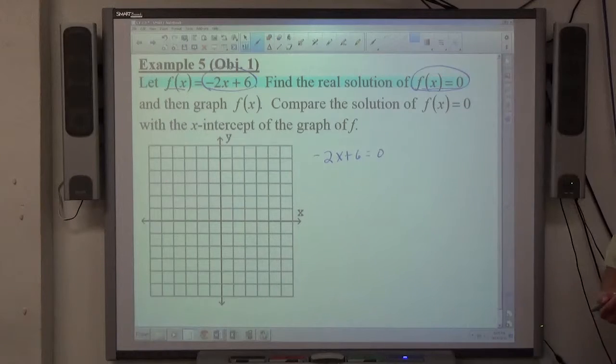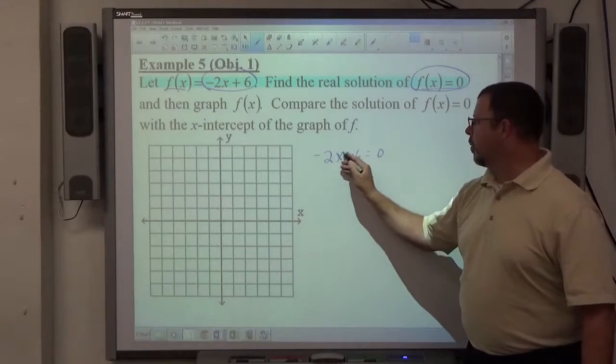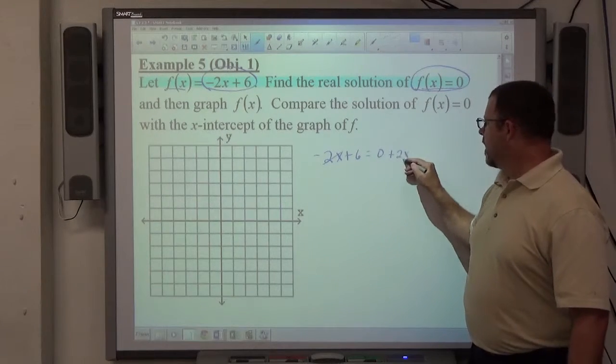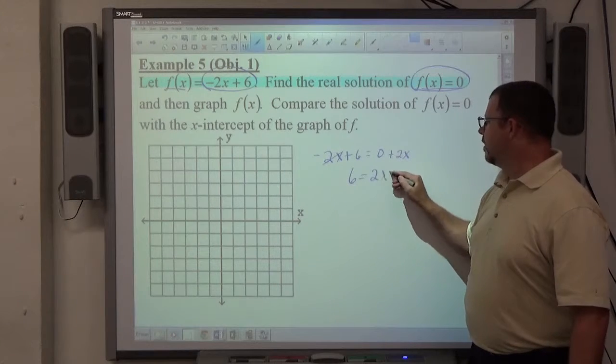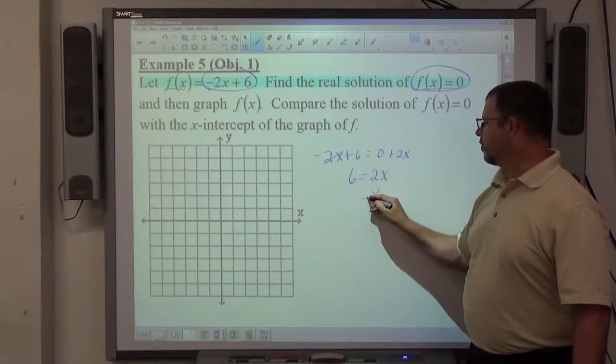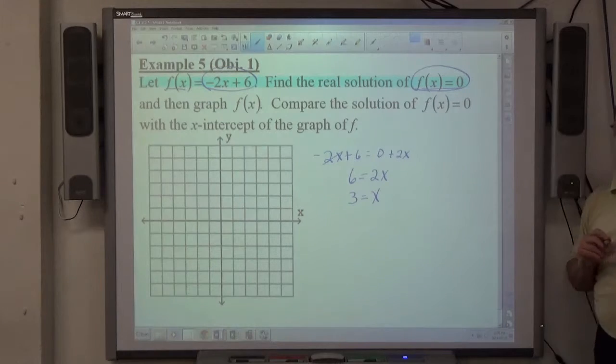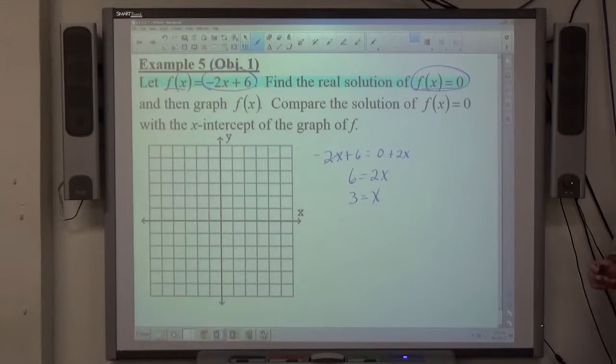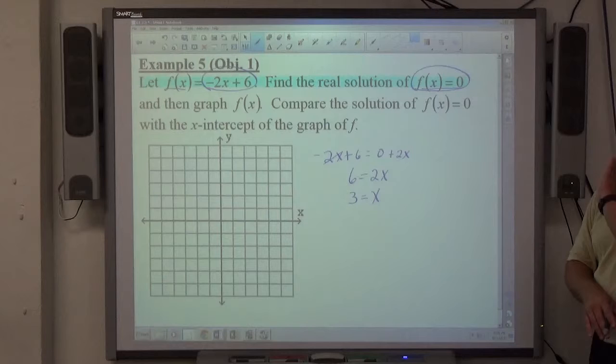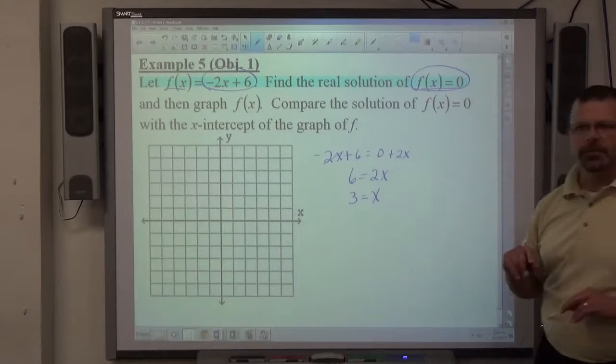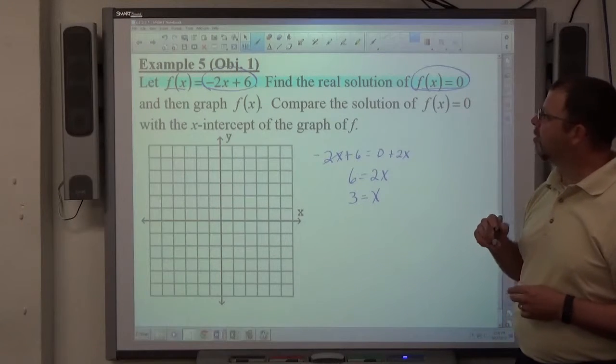So negative 2x plus 6 equals 0, so if I move the 2x over, I get 6 equals 2x. Divide both sides by 2, I get x equals 3. Now a couple things I want to point out to you right here. I'm going to point out to you in a minute after we graph. We can start making connections hopefully.